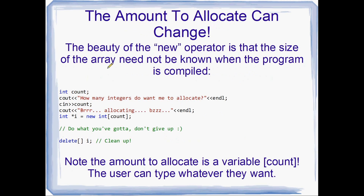The amount to allocate can change — this is one of the beauties of the heap. We could read an integer called count from the user and use that in the square brackets: int* i = new int[count]. If the user types 100, our array will be 100 integers long grabbed from the heap. Or if the user types 1000 or a million, our array will have 1000 or a million integers sitting on the heap, and we get back a pointer to a gigantic array. Then you do whatever you need to do, and once again you delete the array, returning it to the heap. Your program is no longer using it and other apps can use this RAM.